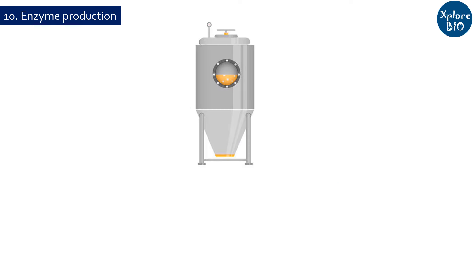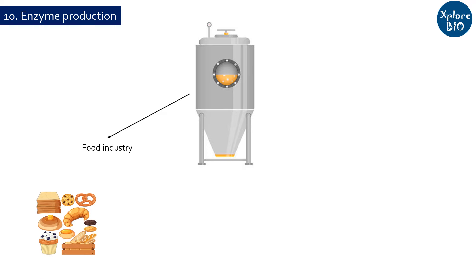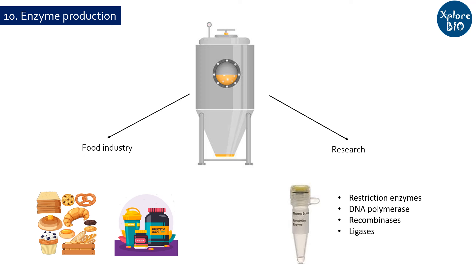Recombinant DNA technology allows for production of large quantities of enzymes for industrial applications. These enzymes can be used for food processing, textile manufacturing, and biofuel production. For example, amylases that break down starch into sugars are used in applications like bread making, brewing, and corn syrup production. Proteases that hydrolyze proteins are used for creating protein supplements. Enzymes for research — such as restriction enzymes, DNA polymerases, recombinases, and ligases used in recombinant DNA technology and molecular biology — are also commercially produced using this technology.